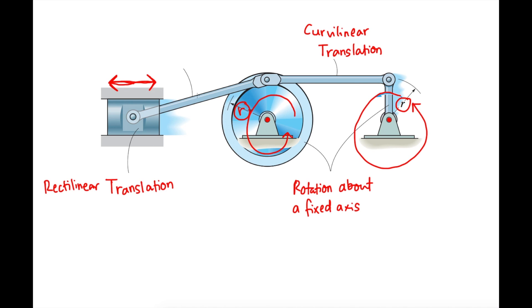Finally, let's look at this last arm. This arm is connected to both a translational motion and a rotational motion. So this arm will actually undergo both translation and rotation, making it the combination of the two — which is called the general plane motion.